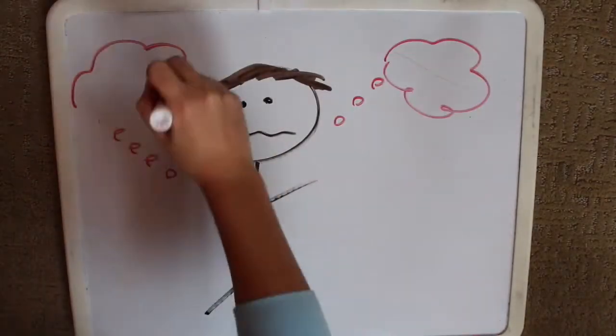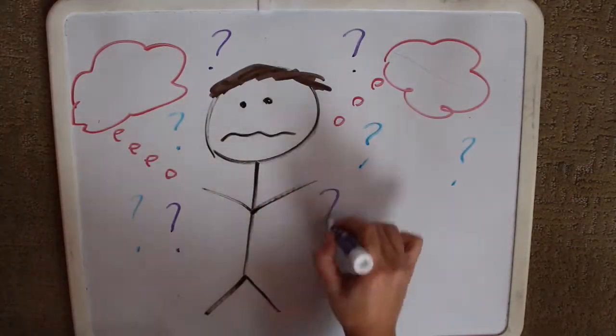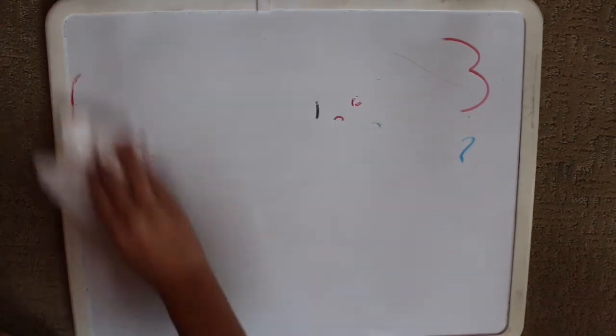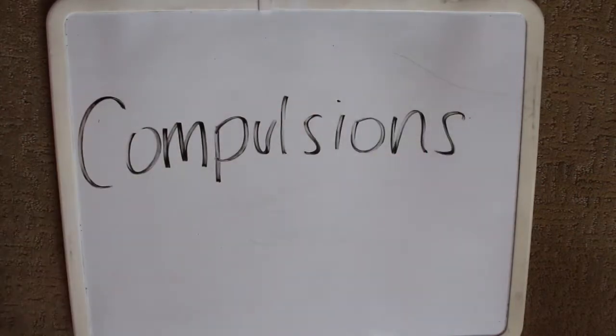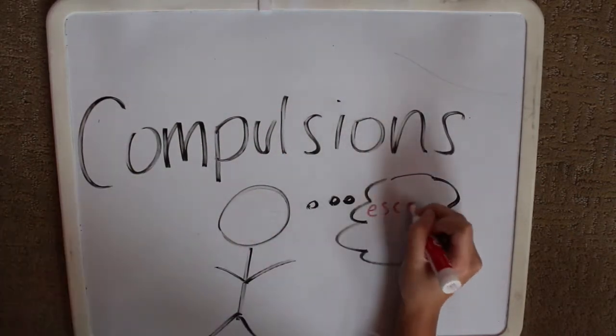People with OCD actually find these thoughts disturbing and realize that they don't actually make any sense. The other half of OCD consists of compulsions. Compulsions are behaviors a person has in an attempt to temporarily escape their distress.